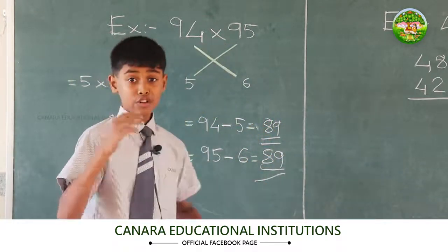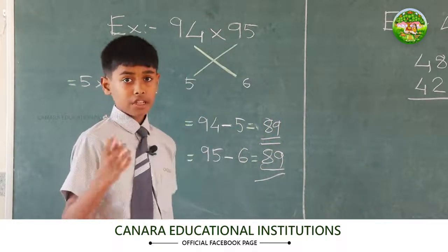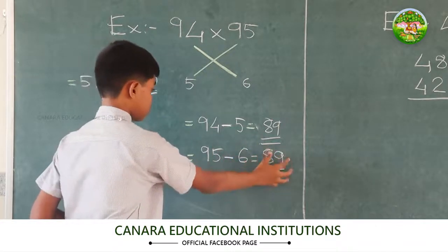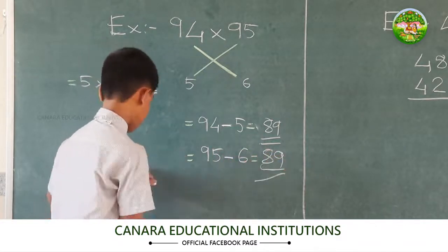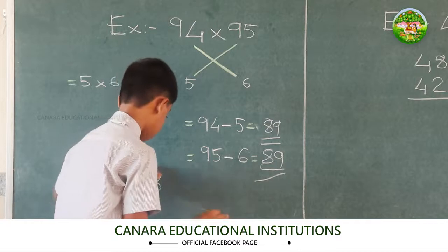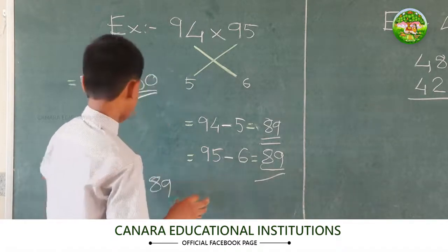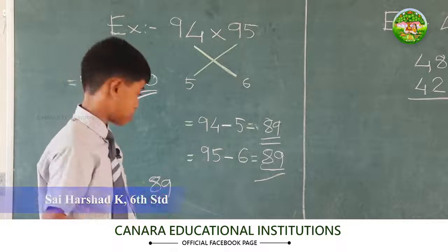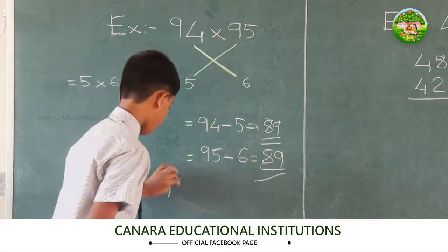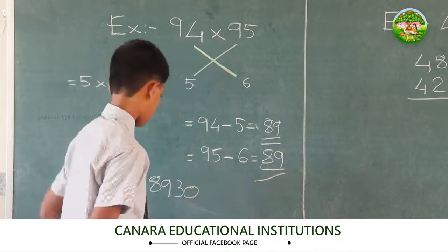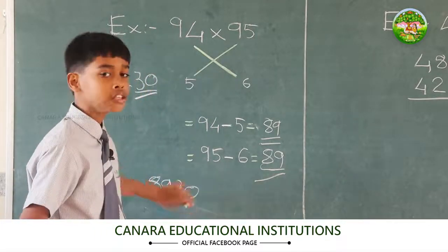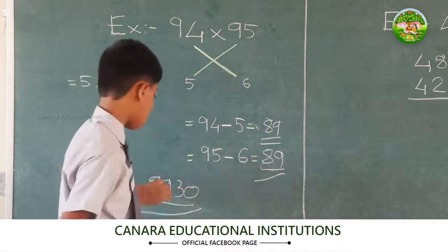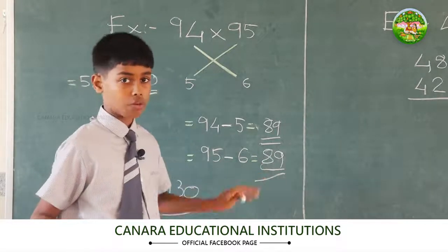In the third step, we subtract 5 from 94 and 6 from 95. Both give us 89. In the fourth step, we take 89 and put it first in our answer, followed by 30. When we join these two numbers, we get the answer as 8930.